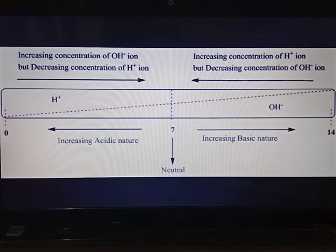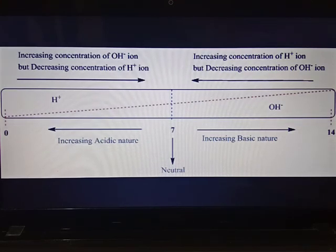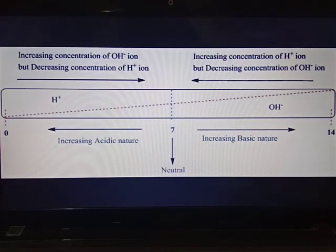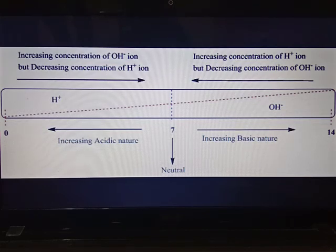In the topic of acids and bases, we learn that when acids and bases get dissolved in water, they release ions. When acids dissolve in water, they produce H+ ions, and when bases get dissolved in water, they produce OH- ions. So pH tells us how many hydrogen ions are present in a given volume of solution, and this concentration of hydrogen ions changes with the dilution.